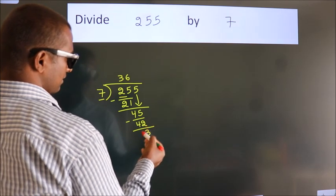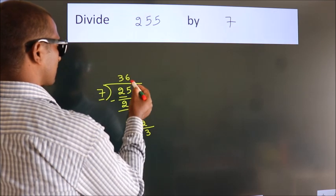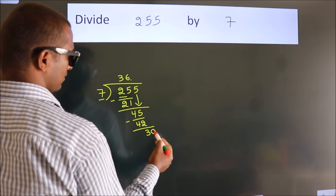After this, no more numbers to bring it down. So what we do is we put dot, take 0. So 30.